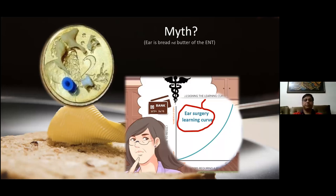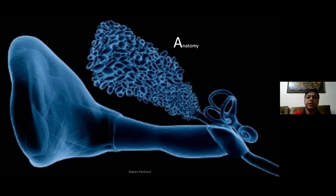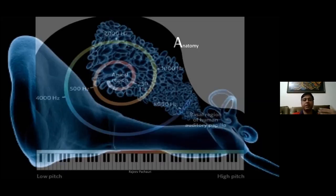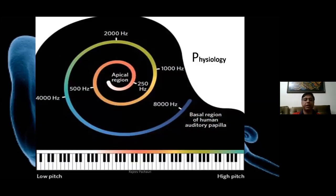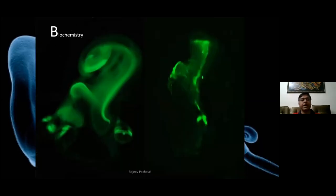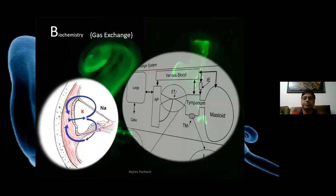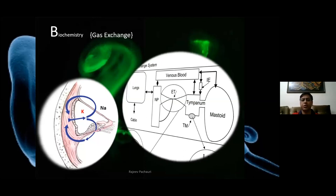Before starting any ear surgery, you should be well aware of the anatomy of the ear, starting from the Eustachian tube and surrounding areas, including histopathology. You should know the physiology — hearing, gaseous exchange system, electrolytes, and biochemistry of the inner and middle ear. These are the basic things we should know before starting practice.